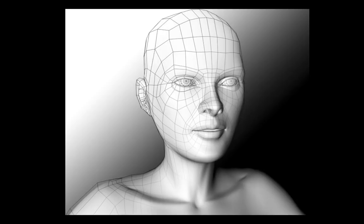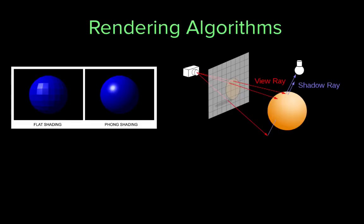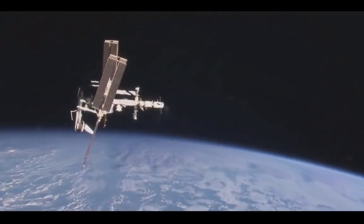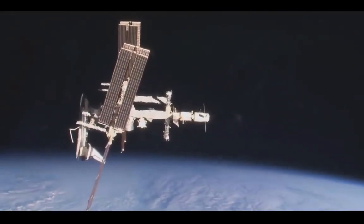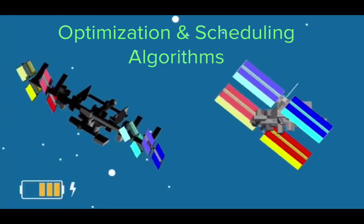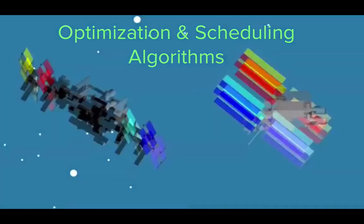How does Pixar color a 3D model of a character based on the lighting in a virtual room? They use a rendering algorithm. How does NASA choose how to arrange the solar panels on the International Space Station and when to rearrange them? They use an optimization and a scheduling algorithm.